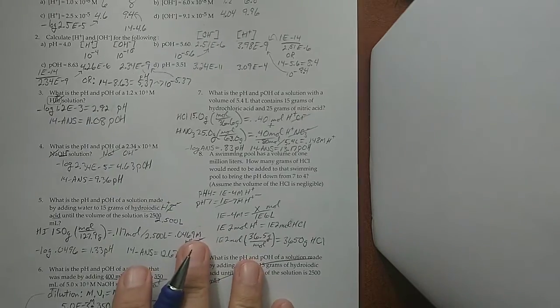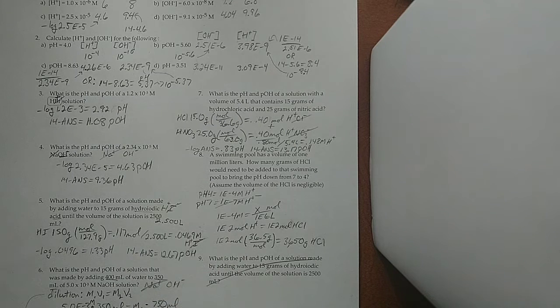Number seven. What's the pH and pOH? The volume contains 15 grams of one kind of acid and 25 grams of another kind of acid. If you go back and look at our solutions at the top, both of these are strong acids.